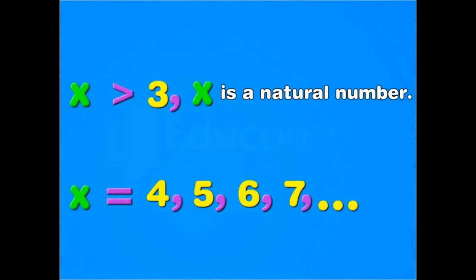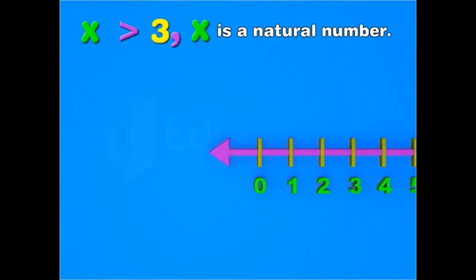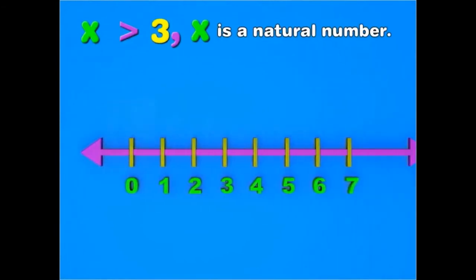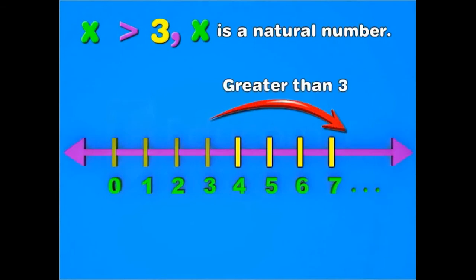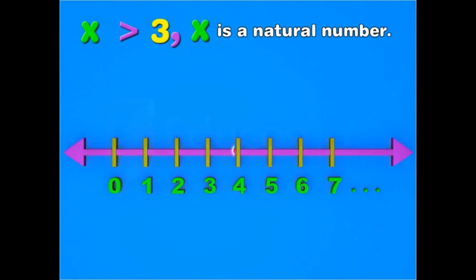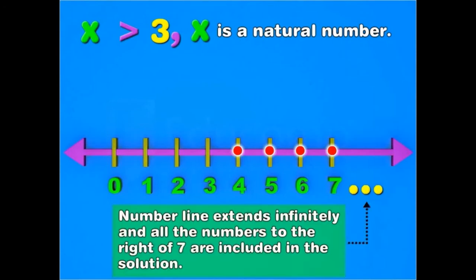You can show this inequation on a number line. Since all the numbers to the right of 3 are greater than 3, mark the numbers to the right of 3 by dark dots. These 3 dots mean that the number line extends infinitely, and all the numbers to the right of 7 are included in the solution.